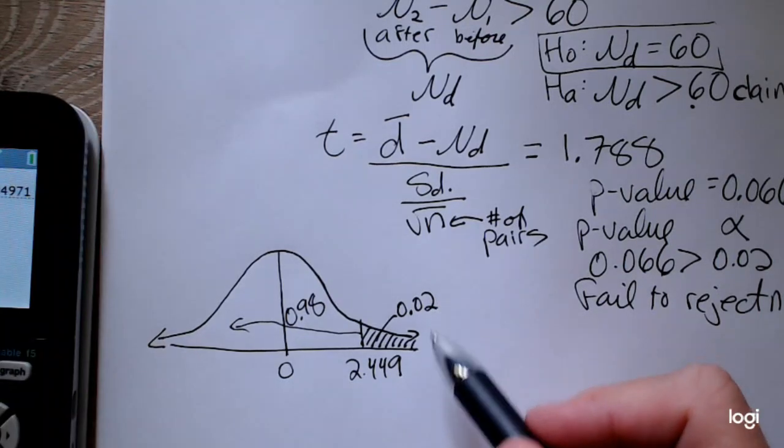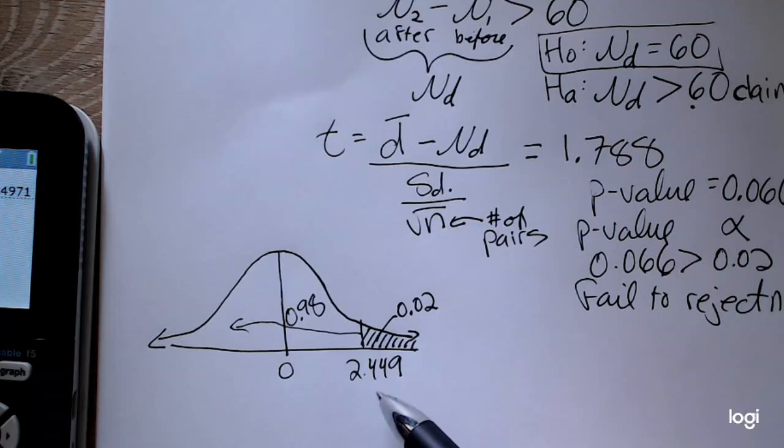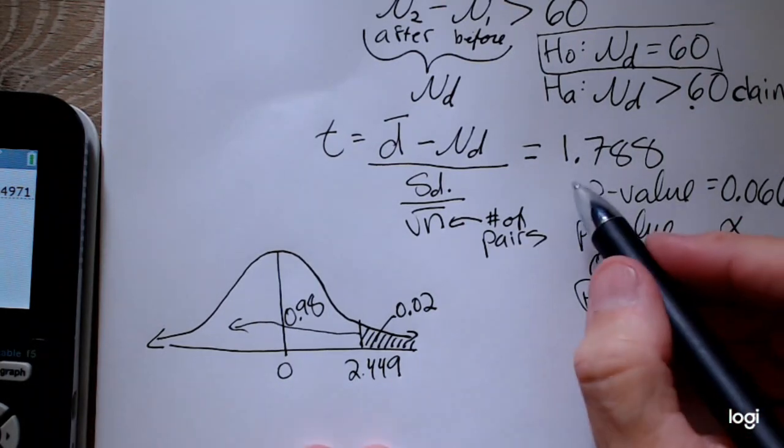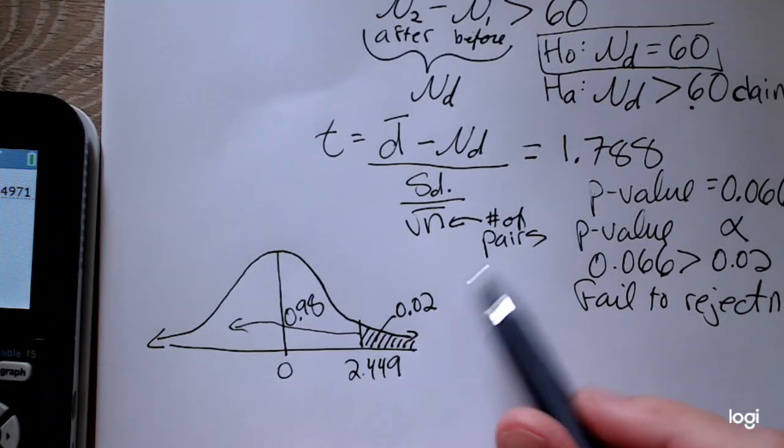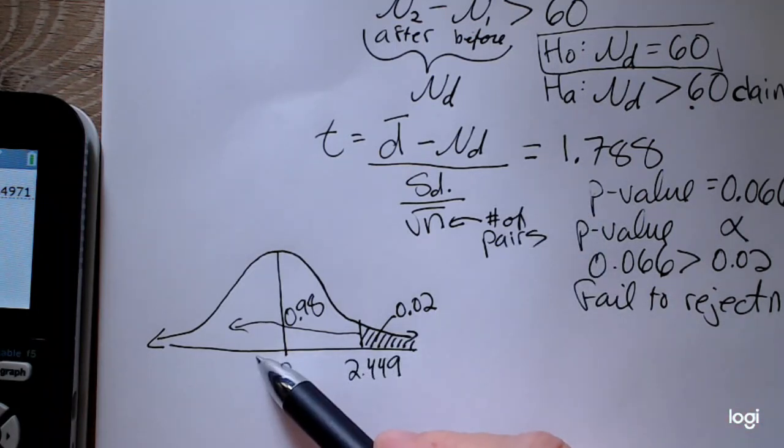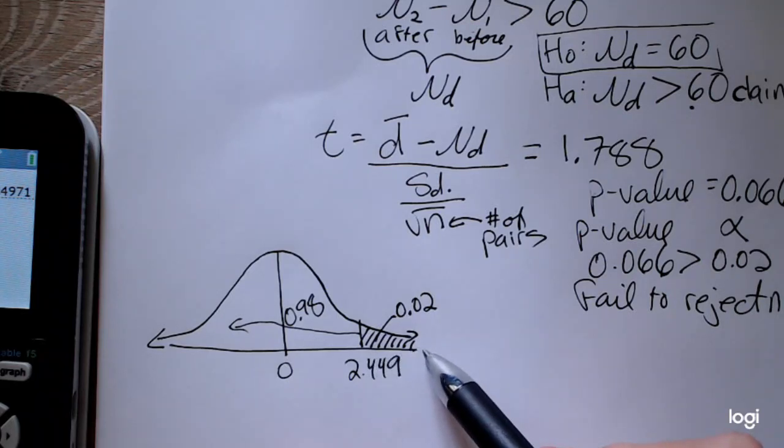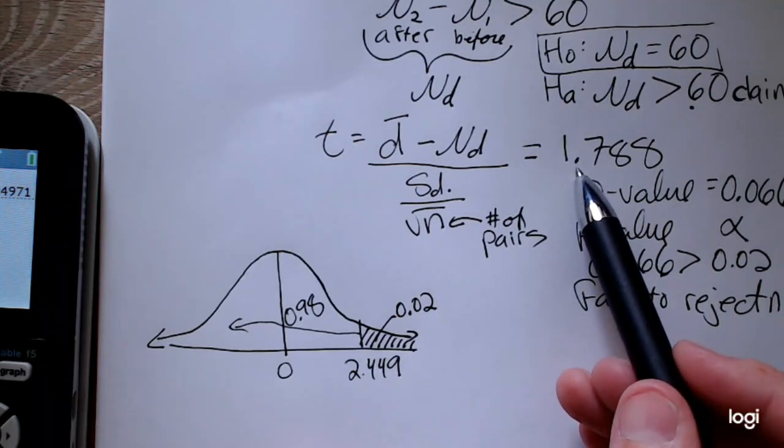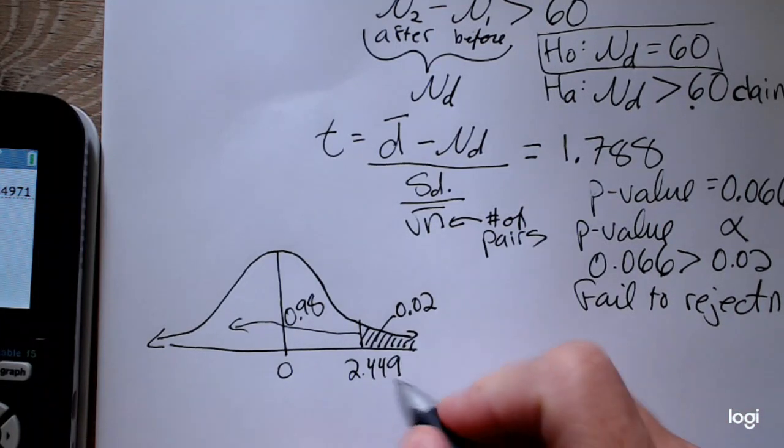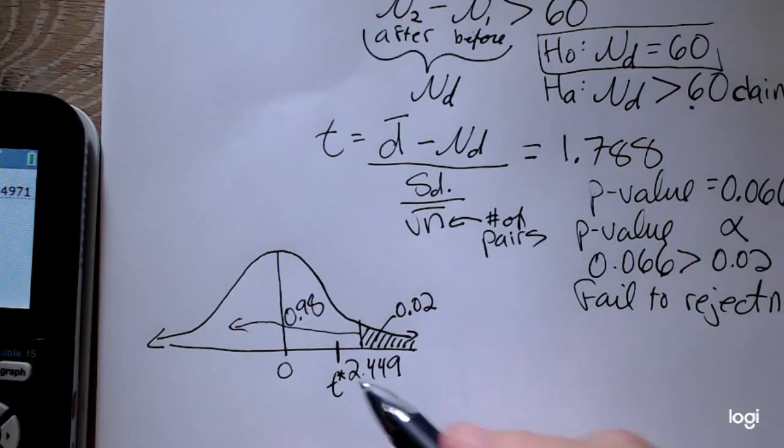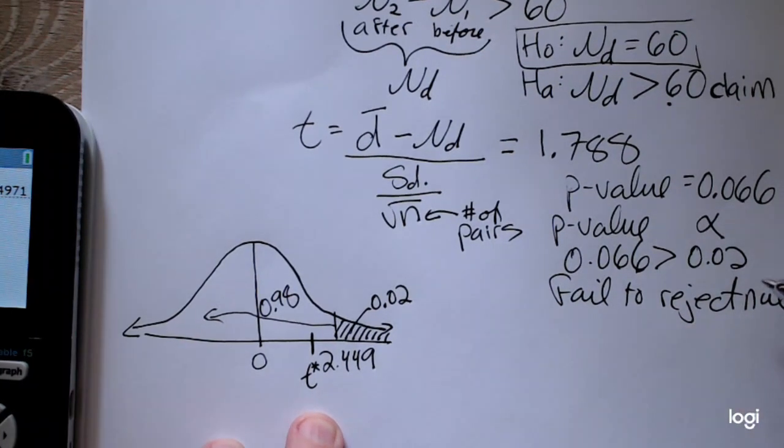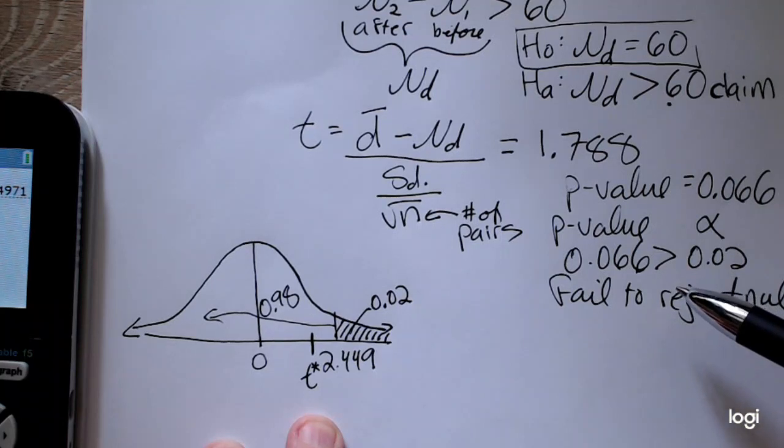And I get 2.449 as my critical value. Again, if I had put in 0.02, it would have been negative. I just remember I need to make it positive. So using the critical value method, I compare my test statistic to my critical value. Is it less than my critical value in this fail to reject region, or is it greater than my critical value in the rejection region? 1.788 is less than 2.449. So my test statistic is down here. I'll just indicate that with a little T star. So this is consistent with the decision I got when I used the p-value method.